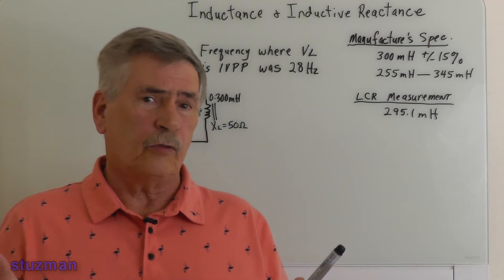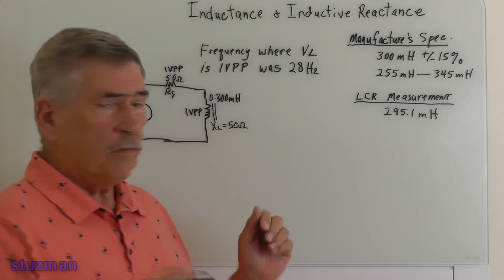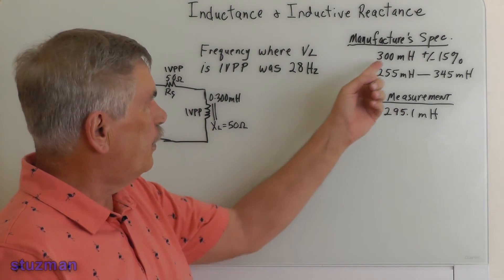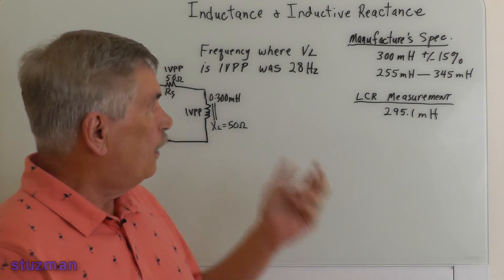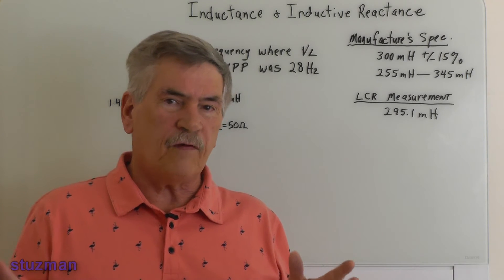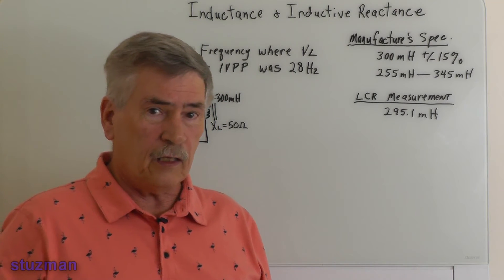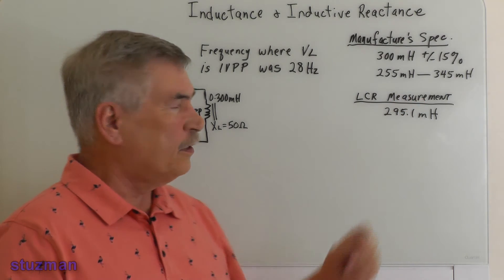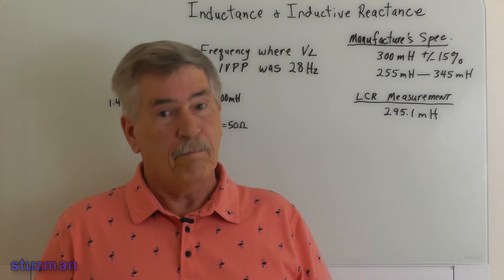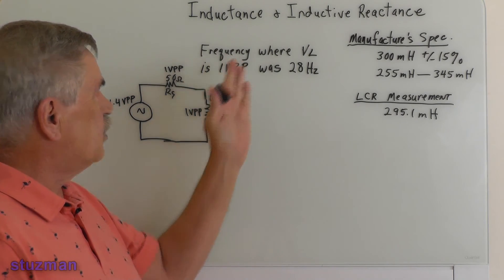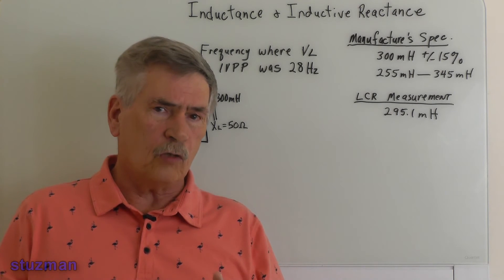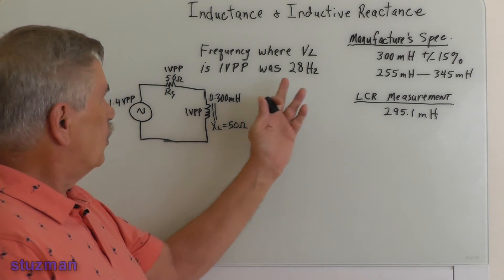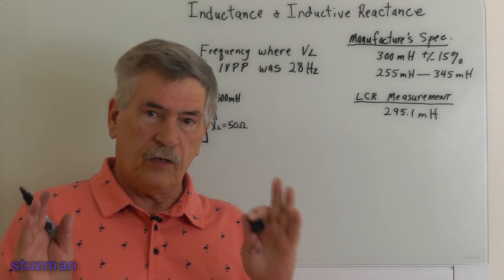We're back from the experiment, so let's look at our results. As a recap: the manufacturer specs on this choke inductor was 300 millihenries with a tolerance of plus or minus 15%. That means it could range from 255 millihenries all the way up to 345 millihenries and still be within spec. Using the LCR meter, we found it was 295.1 millihenries. We adjusted the frequency until we had one volt across the inductor, meaning the inductive reactance was 50 ohms, and that occurred at 28 hertz.